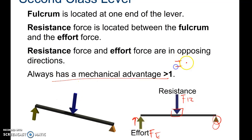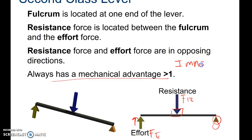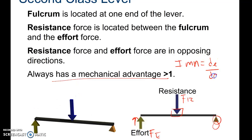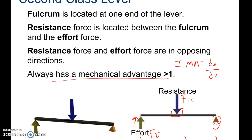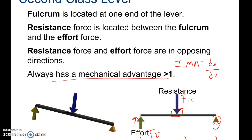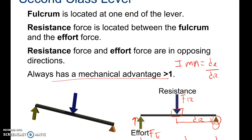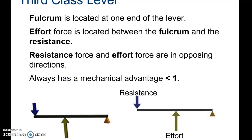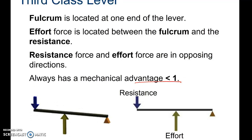Our IMA, as stated earlier, is DE over DR. In a second class lever, your DE is measured from the fulcrum and will always be greater than the DR, so the mechanical advantage will always be greater than one.